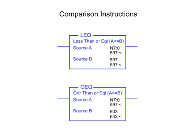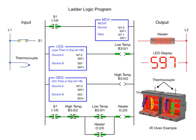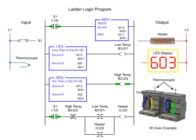A common method of temperature control is an on-off control system. Using comparison instructions in a PLC program, outputs are energized when the set point is reached. In this on-off temperature control example, the heater turns on when the temperature falls to or below 597 degrees, and turns off when the temperature reaches 603 degrees or more.